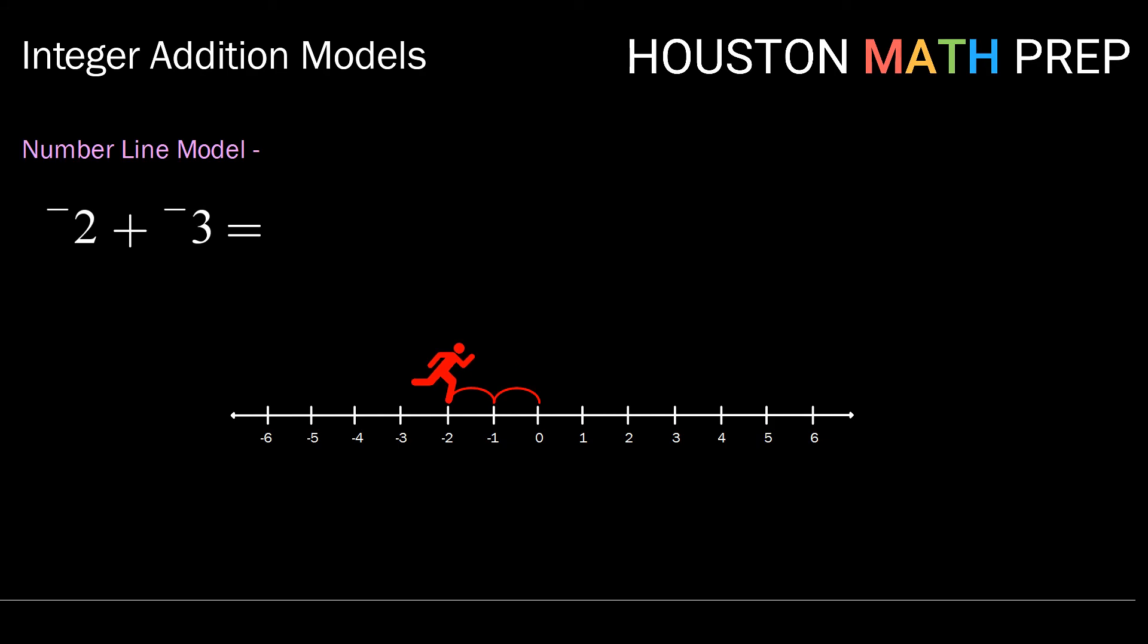So one, two. And then plus negative three means from there, we'll take three more backward steps. One, two, three.